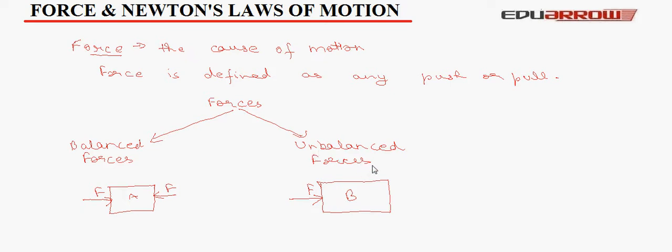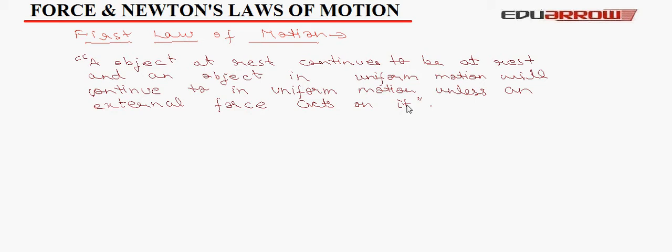Force is a vector quantity. It has both magnitude and direction. Now, we will discuss the first law of motion. The first law of motion states that an object at rest continues to be at rest and an object in motion continues to be in uniform motion unless an external force acts on it. By this, we mean that an object which is at rest will not start moving unless it is acted upon by a force. An object which is moving with constant velocity will not accelerate until an external force acts on it.